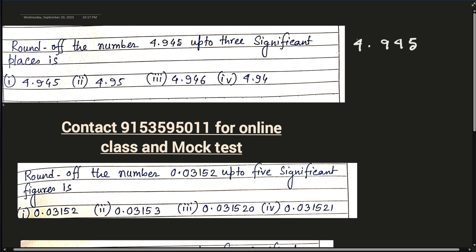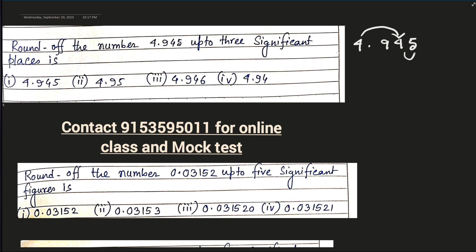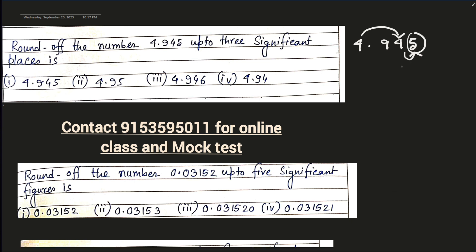We have to consider 4th significant places, i.e. 3 decimal places. So we have exactly half of a unit, i.e. 5. We can see that the higher quantity, i.e. 3rd significant figure of the position, even or odd, as a digit.